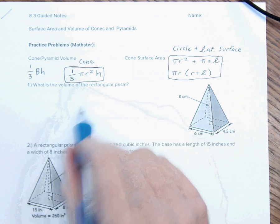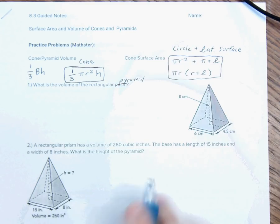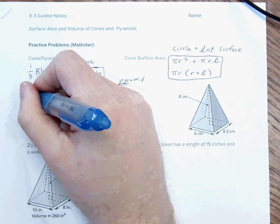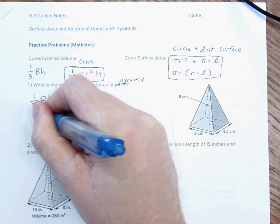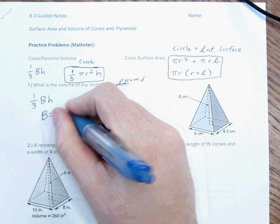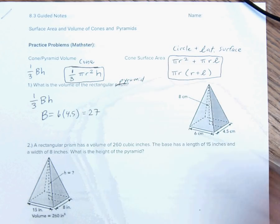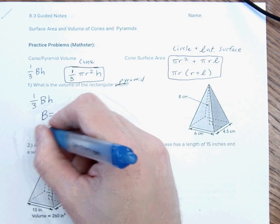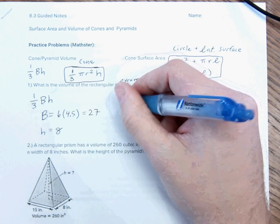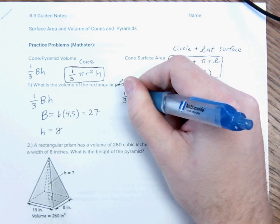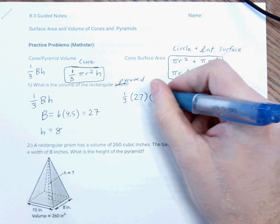So, what is the volume of the rectangular pyramid? The volume is going to be one-third base times height. So, we need the base, which is 6 times 4.5, which is 27, and the height is 8. So, if I set this out, I'm going to say one-third area of the base, which is 27, times the height, which is 8.